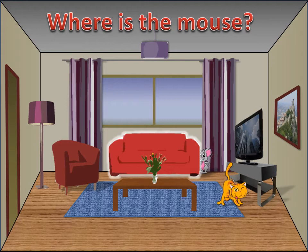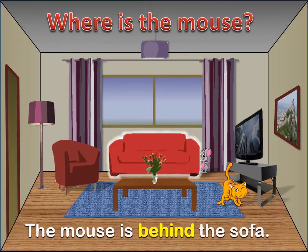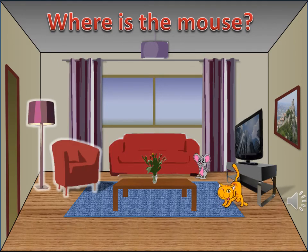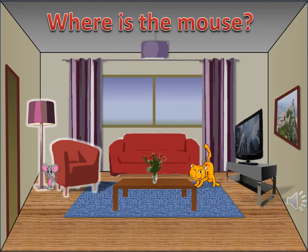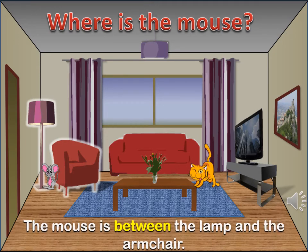Where is the mouse again? Can you see him? Well, the mouse is behind the sofa. Where is the mouse hiding again? Well, the mouse is between the lamp and the armchair.